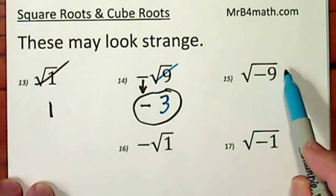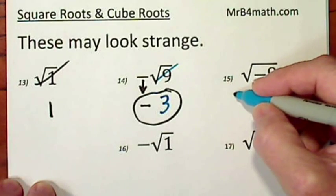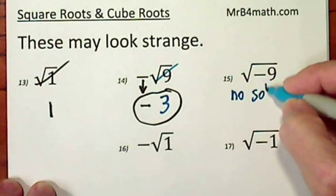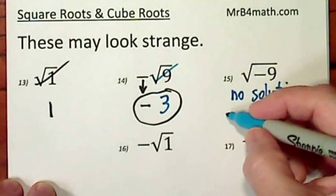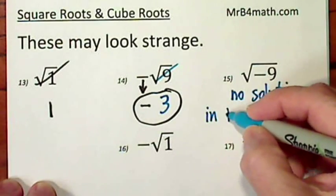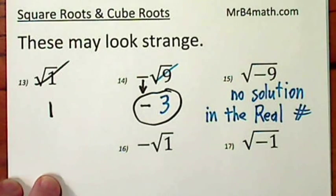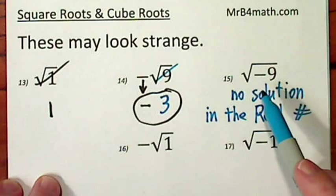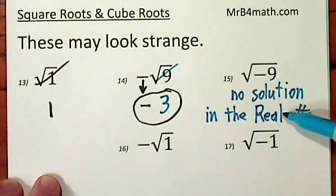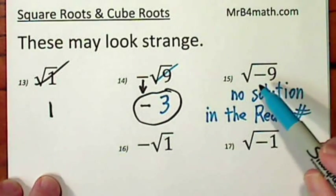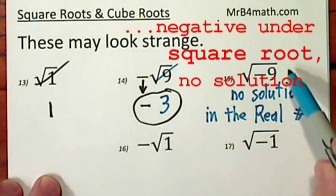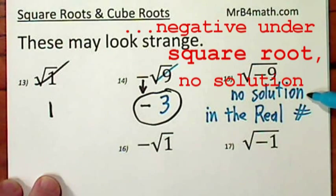However, the square root of negative 9 has no solution in the real numbers. Because if you think about it, how can you have a number times itself that gives you a negative value? So you can't, at least not in the real numbers. We have complex numbers where there is a solution, but you're not called on to deal with that just yet.